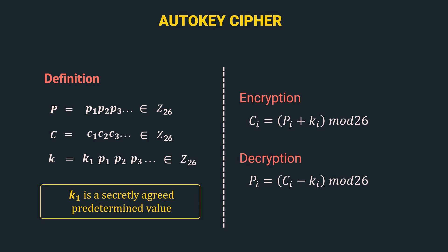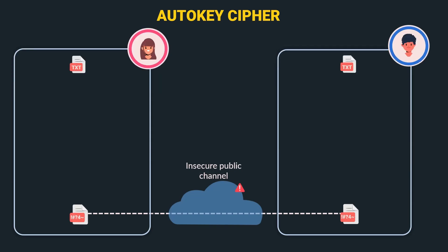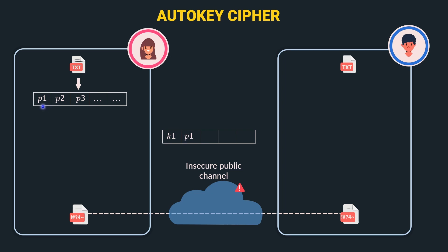Let's represent it visually to understand it better. Here we have Alice with her plain text and ciphertext, and here we have Bob with his plain text and ciphertext, and both are connected via an insecure public channel. Alice takes a plain text and represents it as a stream of characters p1, p2, p3, and so on. For encrypting, she will generate the key stream. The first character of the key stream is k1, which is predetermined by both Alice and Bob and shared between each other.